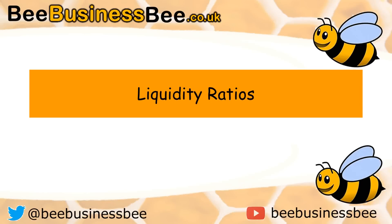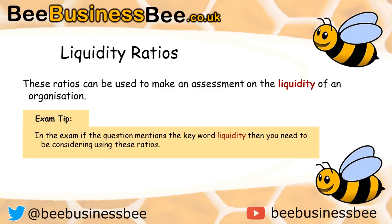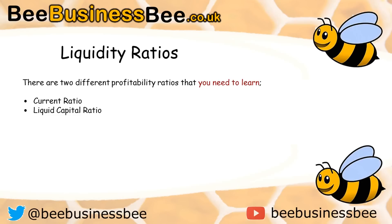In this video we will cover the topic of liquidity ratios — looking at what a liquidity ratio is, how it's calculated, what the formula is, and what it can be used for in a business context. These are ratios used to assess the liquidity position of an organization. The two ratios you need to learn are the current ratio and the liquid capital ratio.